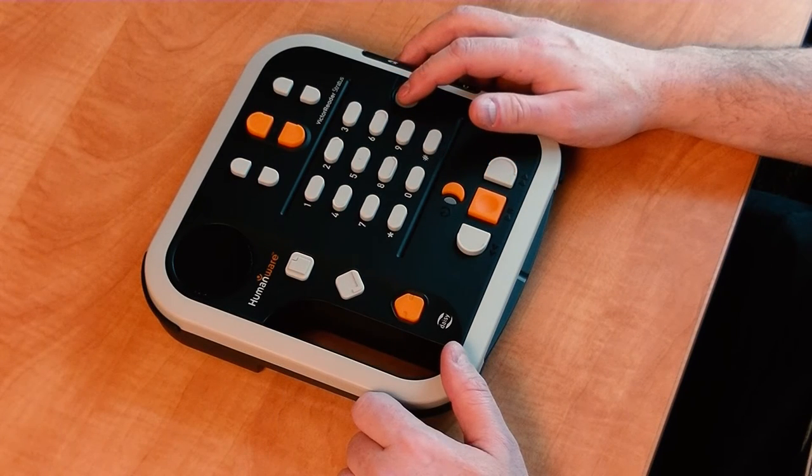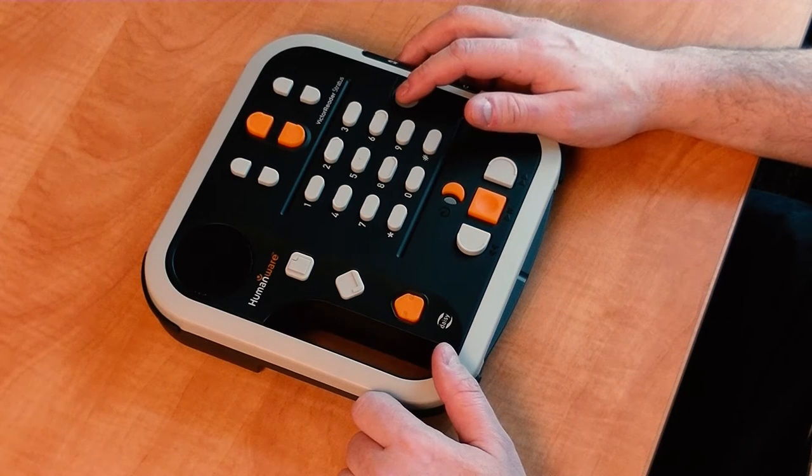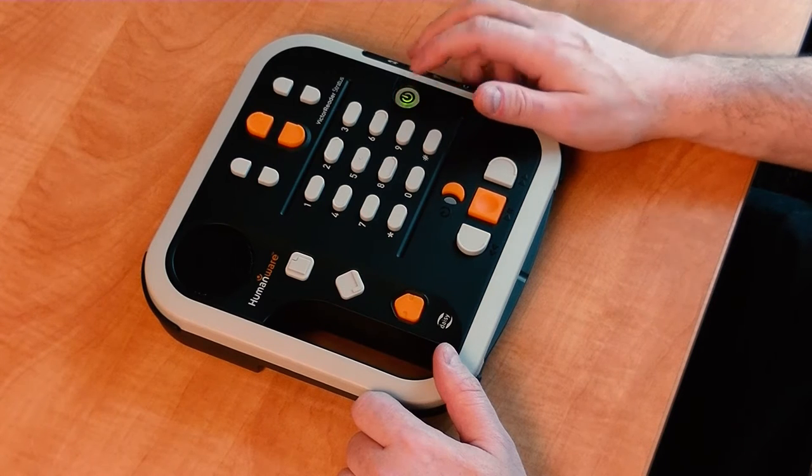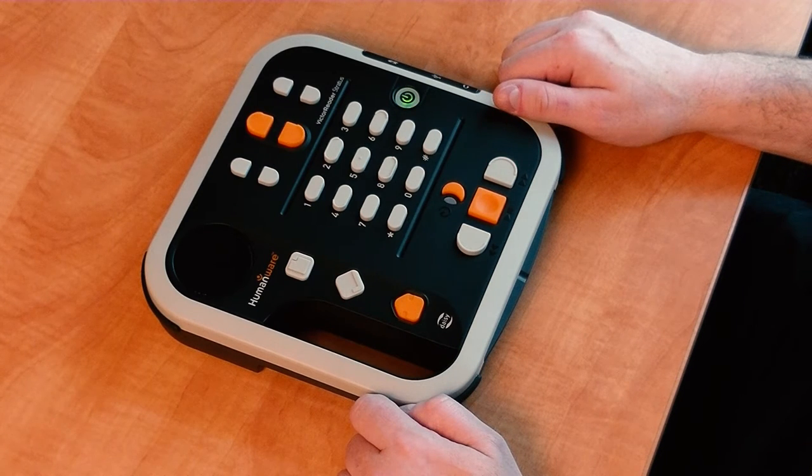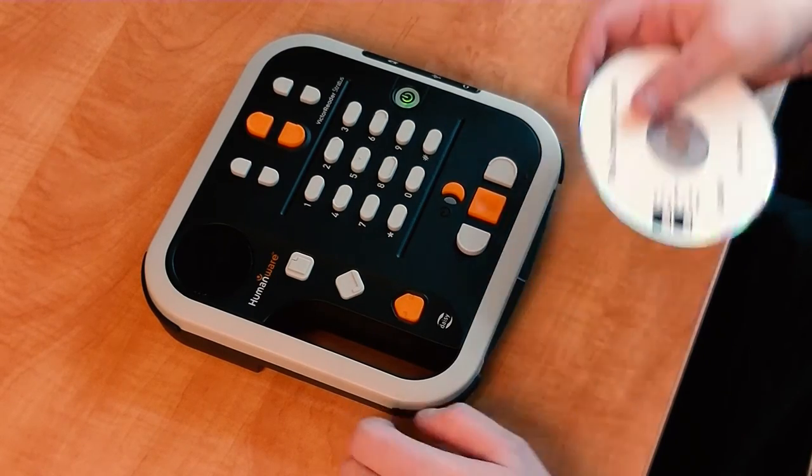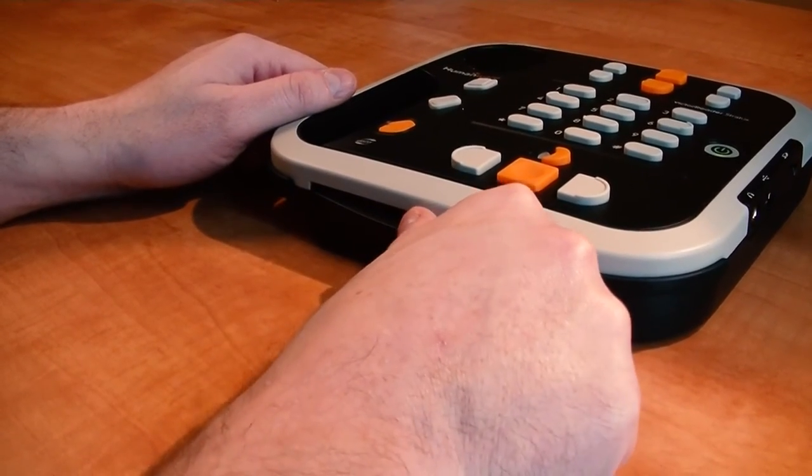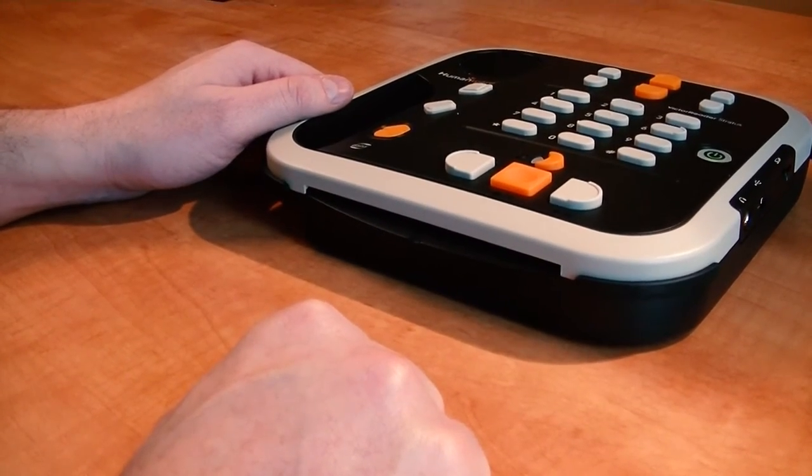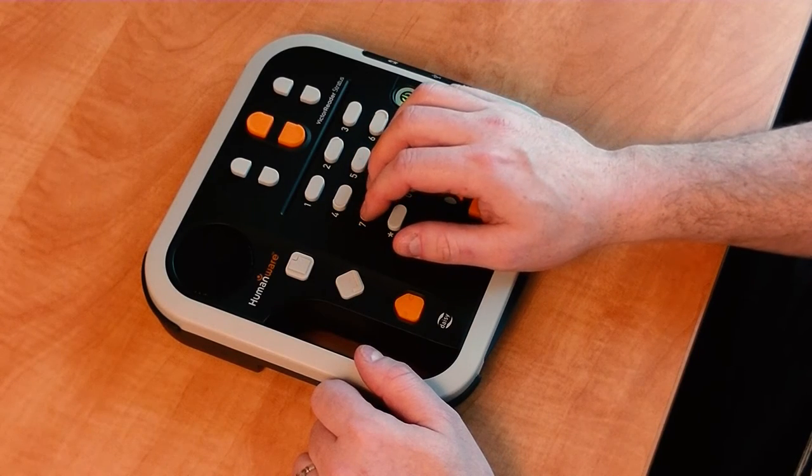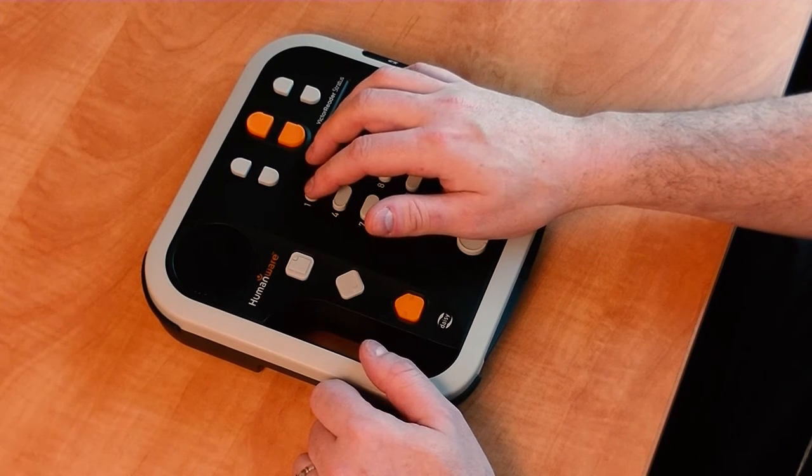All right, now I'm going to turn the Victor Reader Stratus 12M on and show you how to play a DAISY audio CD. Welcome to Victor Reader. I will now put my disc into the player. Now to navigate to the bookshelf on my player I need to press the number one key which is the bookshelf key and that will take me over to the CD.